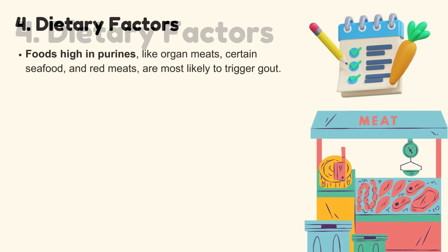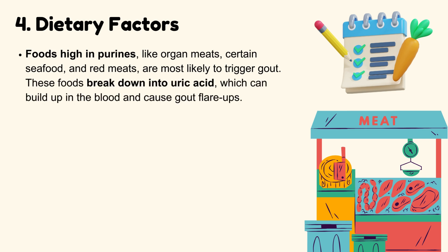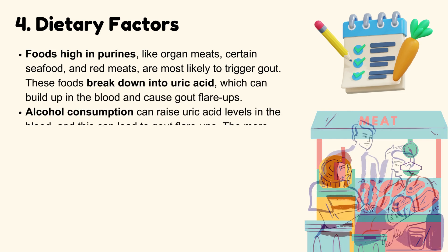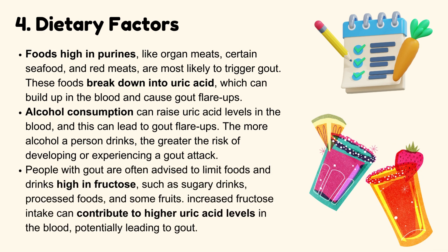Dietary factors: Foods high in purines, like organ meats, certain seafood, and red meats, are most likely to trigger gout. These foods break down into uric acid, which can build up in the blood and cause gout flare-ups. Alcohol consumption can also raise uric acid levels and increase the risk of gout flare-ups — the more alcohol a person drinks, the greater the risk. People with gout are also advised to limit foods and drinks high in fructose, such as sugary drinks, processed foods, and some fruits, as increased fructose intake can contribute to higher uric acid levels.